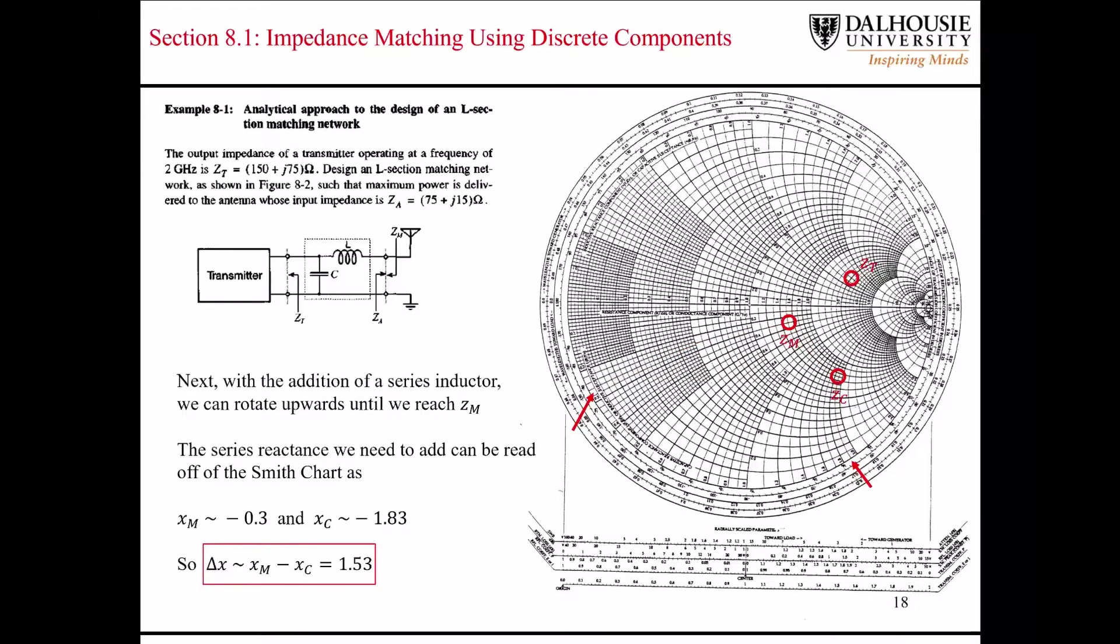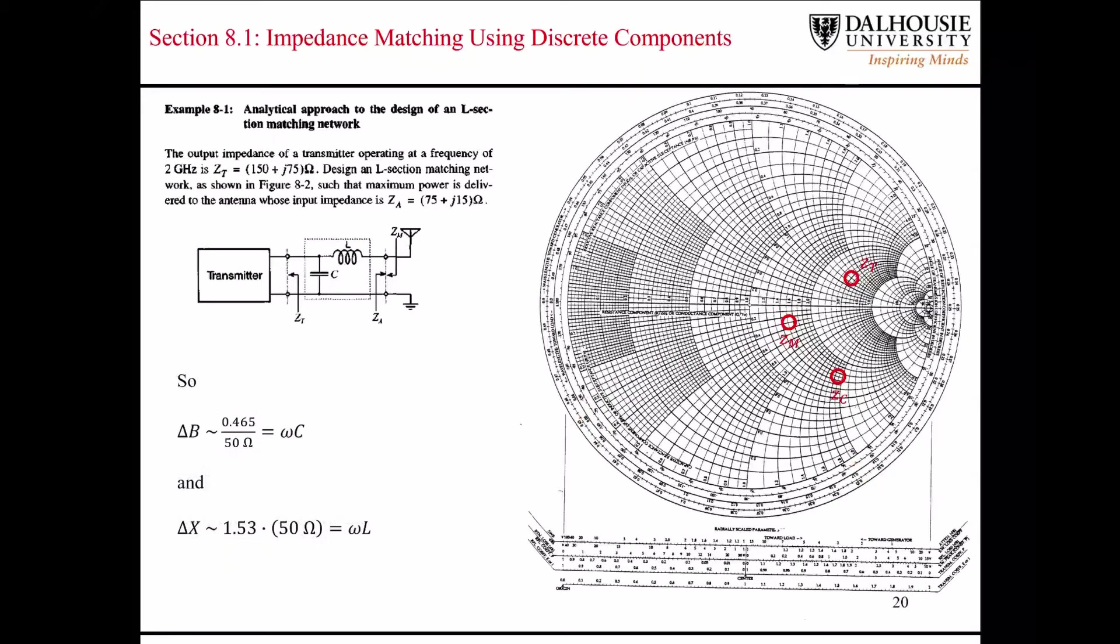The difference between these two values is going to be 1.53. We can use the change in susceptance and the change in reactance to figure out the value of the capacitor and the inductor.